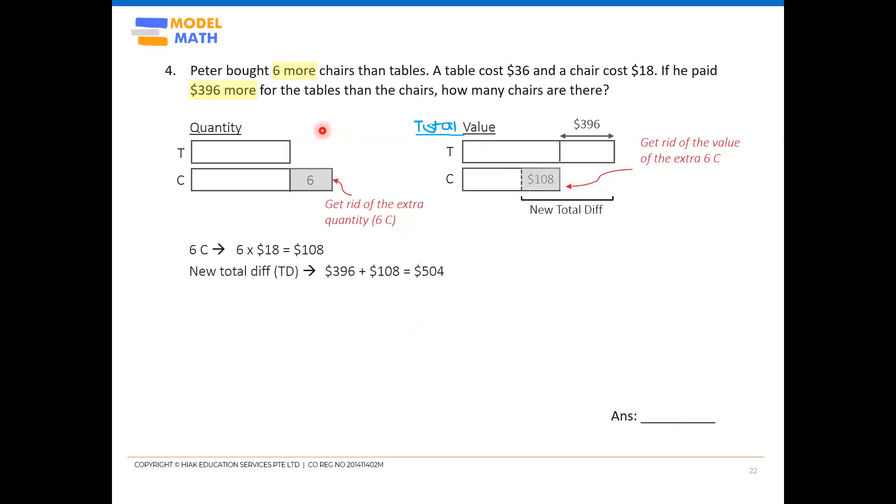Okay. What to do next? So back to the quantity model. Remember, since we have gotten rid of the extra six chairs, now the quantity is now the same between tables and chairs. So since quantity is the same, okay, we can apply our grouping method. Never ever do 504 divided by two units. It doesn't work that way because the cost of a table and a chair is different. Different cost. Only the quantity is the same. If you take 504 divided by two, then you're telling me the value is split equally, which doesn't make sense. Okay. Only the quantity is equal. Value may not be equal in this case.